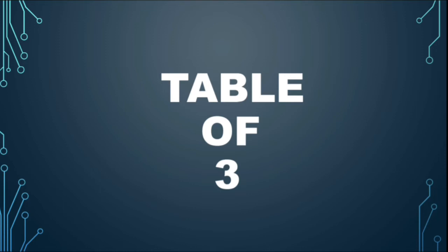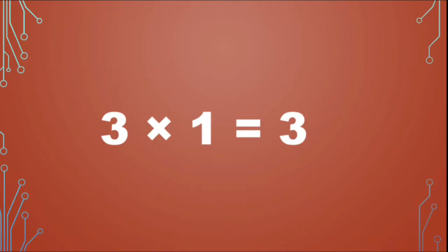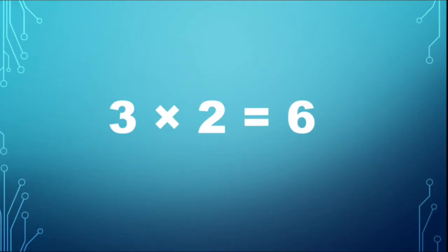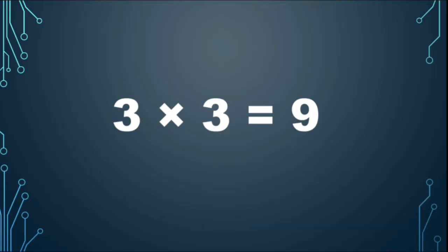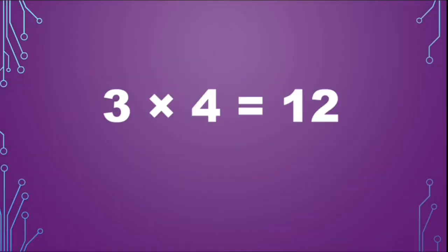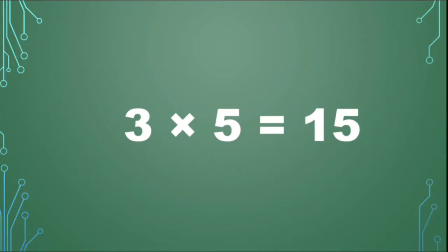Table of 3. 3 1s are 3, 3 2s are 6, 3 3s are 9, 3 4s are 12, 3 5s are 15.